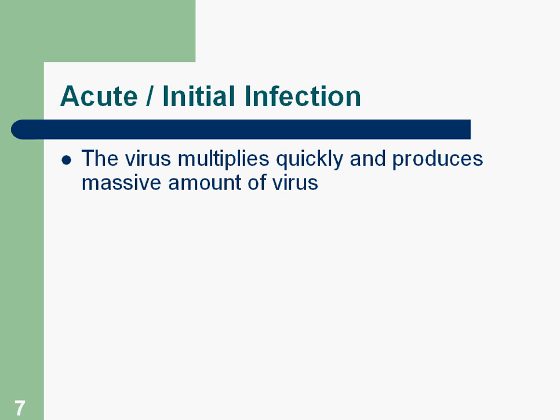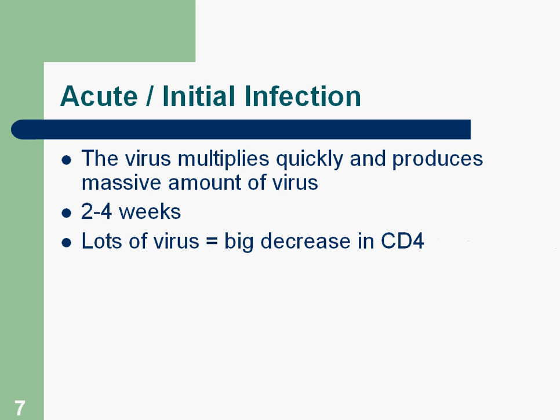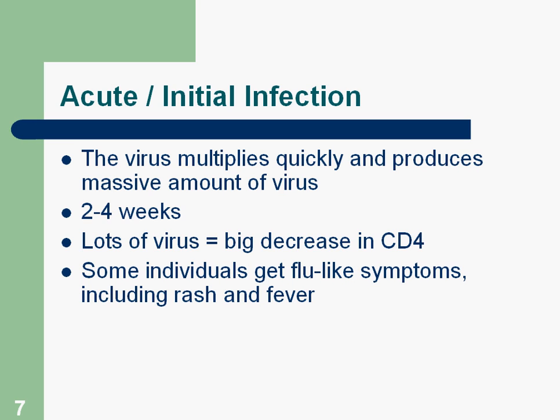When we talk about acute or initial infection — however the virus is transmitted, in whatever body fluid it is, and however that body fluid got into somebody else's bloodstream — once the virus is in the bloodstream, it multiplies really quickly and produces a massive amount of virus. This stage is generally considered to be from two to four weeks, roughly the first month after infection. The increase in virus means a big decrease in CD4 cells.